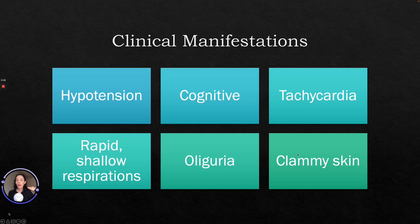The clinical manifestations include hypotension because hypovolemic shock reduces fluid volume, so you're going to have a decrease in blood pressure with a narrowed pulse pressure. Cognitively the patient will experience mental status changes. You might see tachycardia to compensate for decreased cardiac output, with the heart pumping faster than normal. You may see rapid shallow respirations due to a decrease in oxygen delivery — the respiratory system compensating.